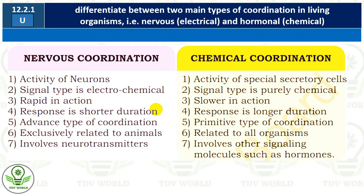Nervous coordination is rapid in action — it is fast. When you touch something, you immediately feel what it is. Chemical coordination, on the other hand, is slower in action. The response in nervous coordination is of shorter duration — the time taken for the response is very short. As in the example given, when you touch something, you immediately get the response and know whether it is soft or hard.